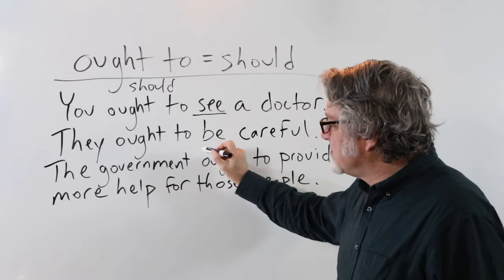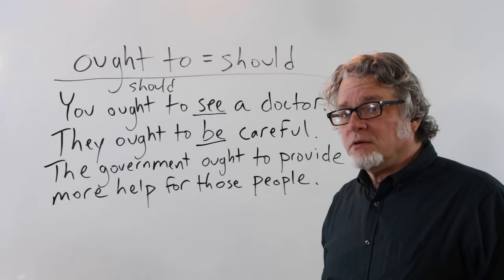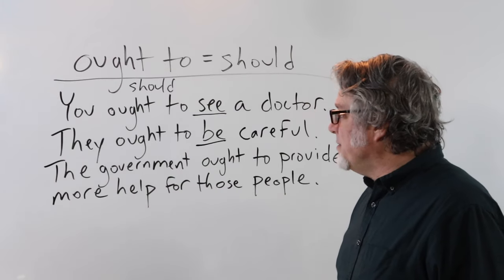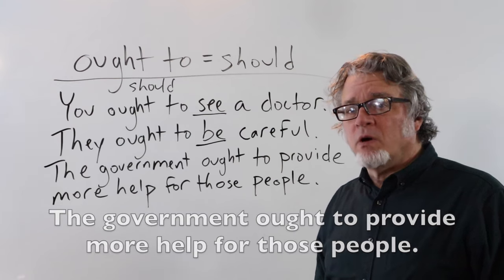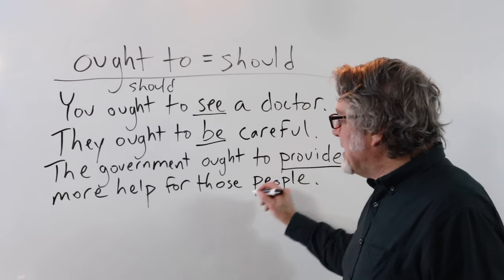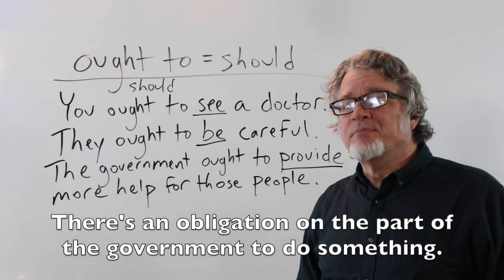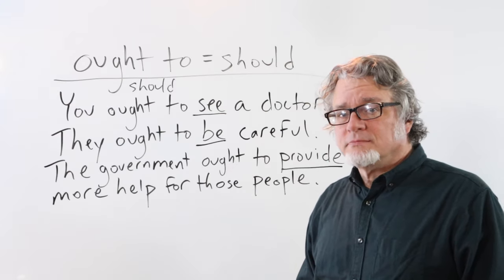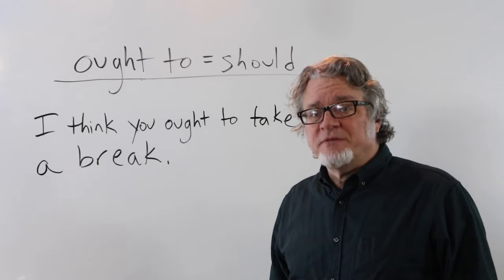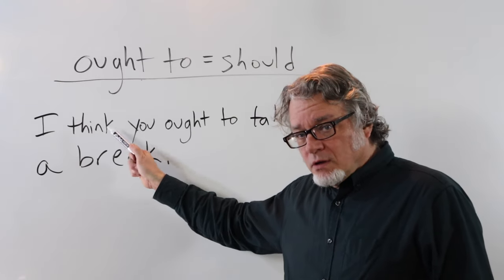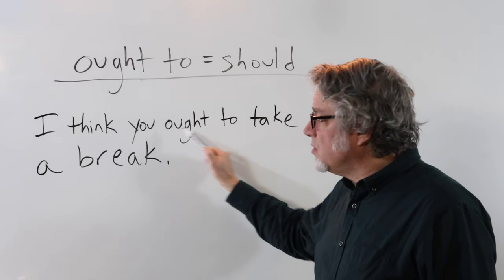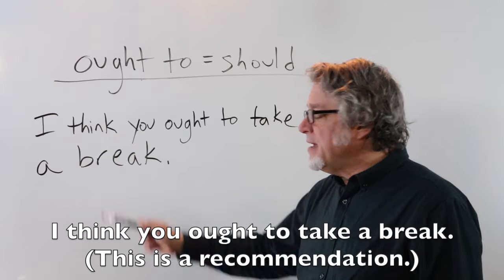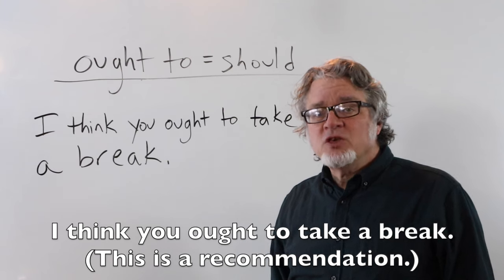The verb 'be' is the main verb in this sentence: 'They ought to be careful.' The verb 'be' is often used with ought to. 'The government ought to provide more help for those people' — here there is an obligation on the part of the government. Ought to is a good choice when giving recommendations or advice. When talking to another person, start with 'I think': 'I think you ought to take a break.'